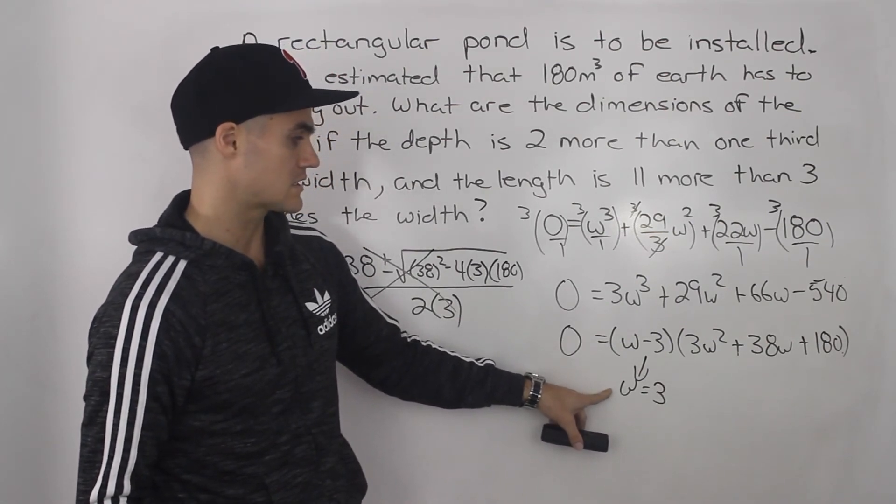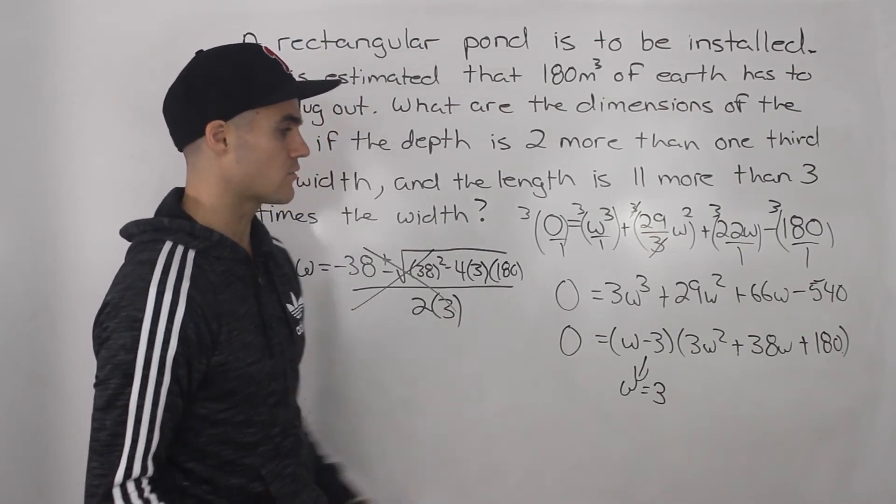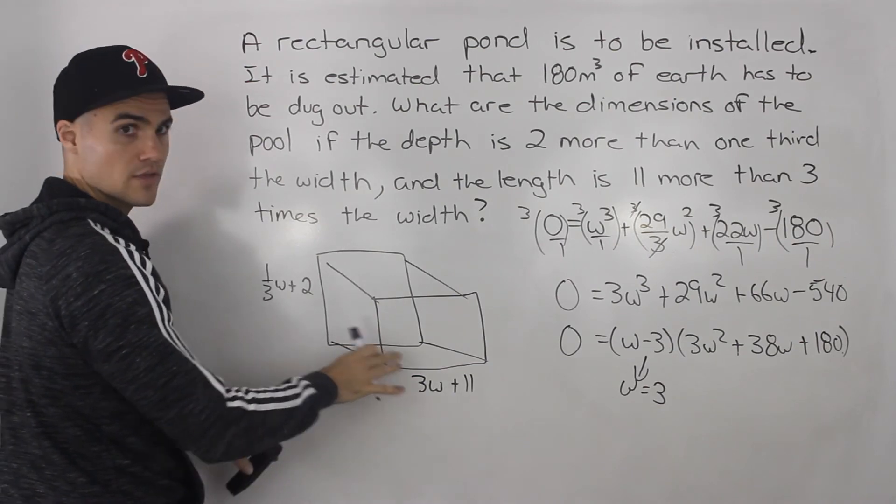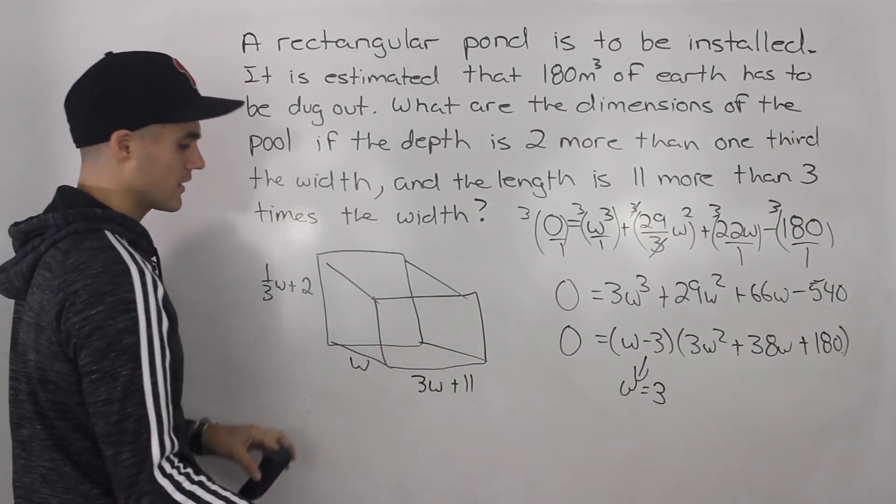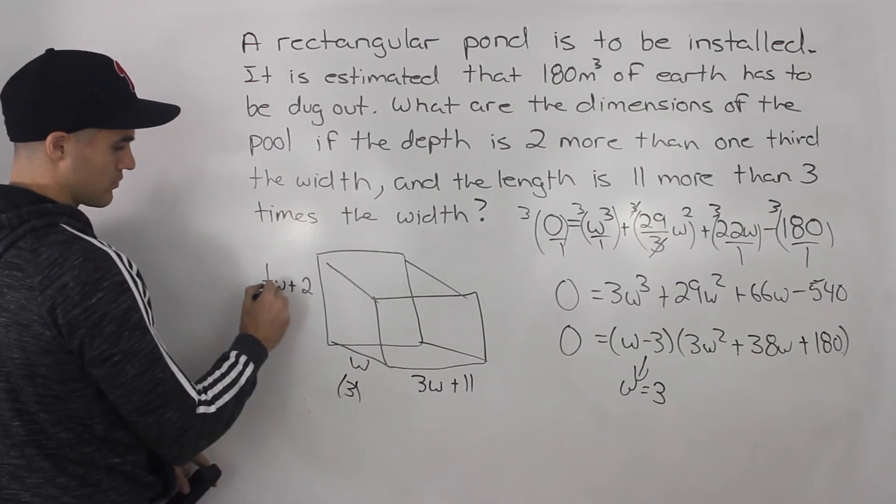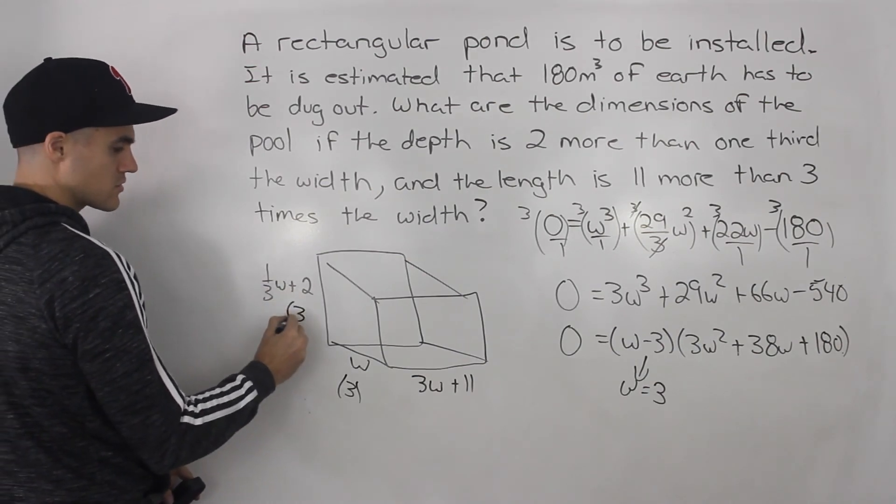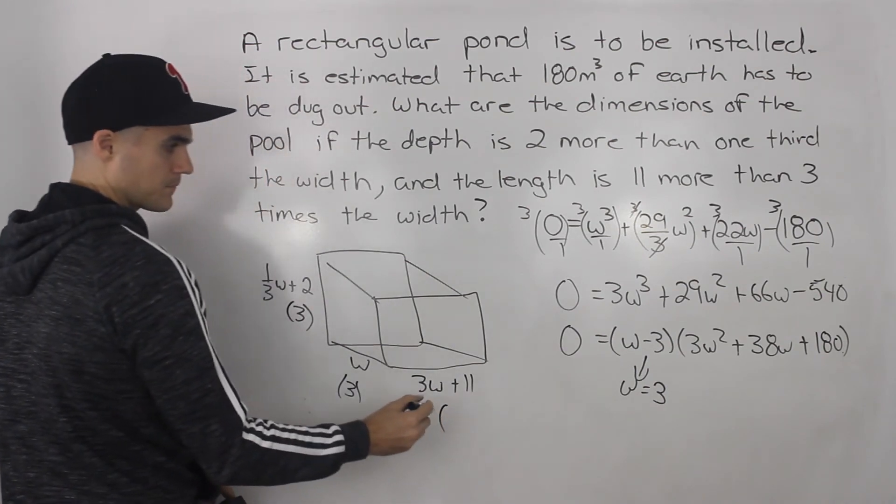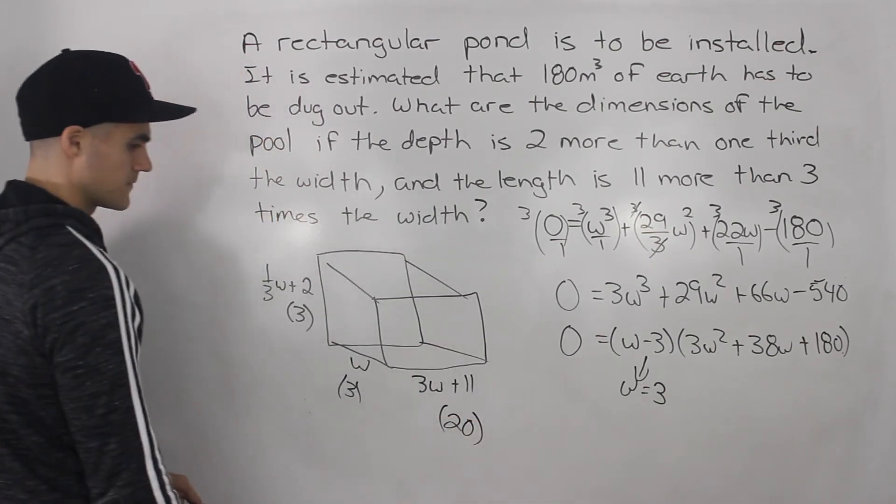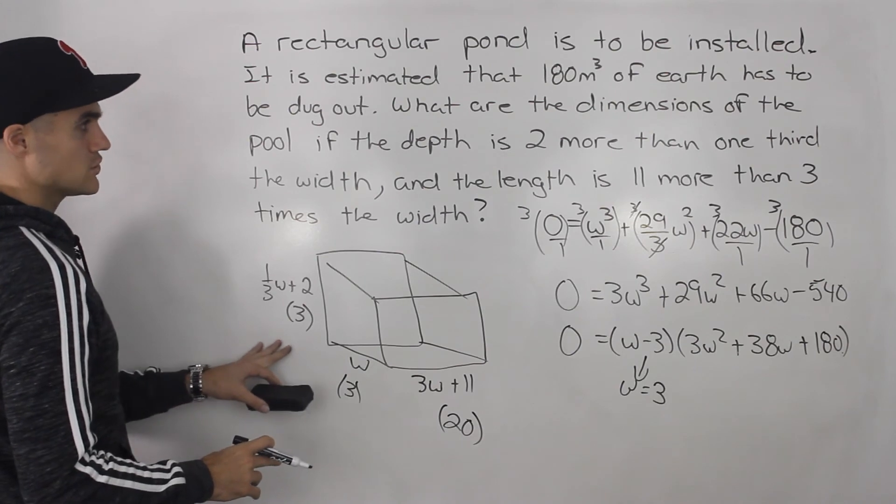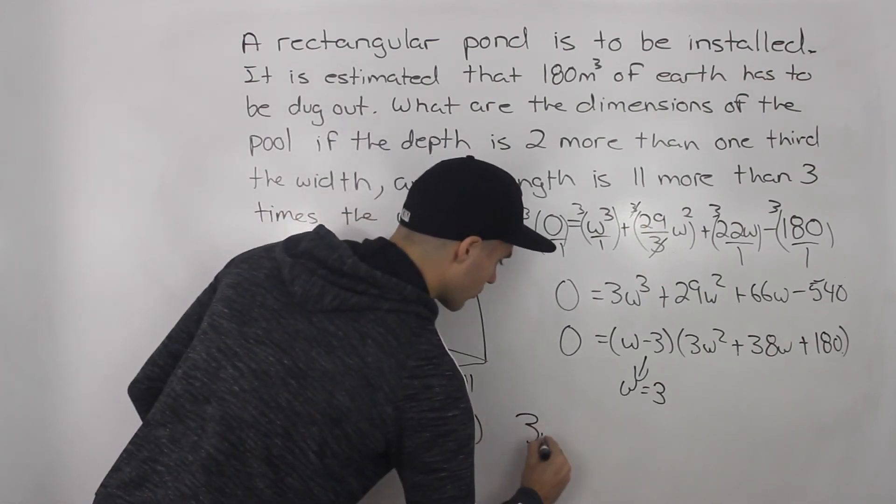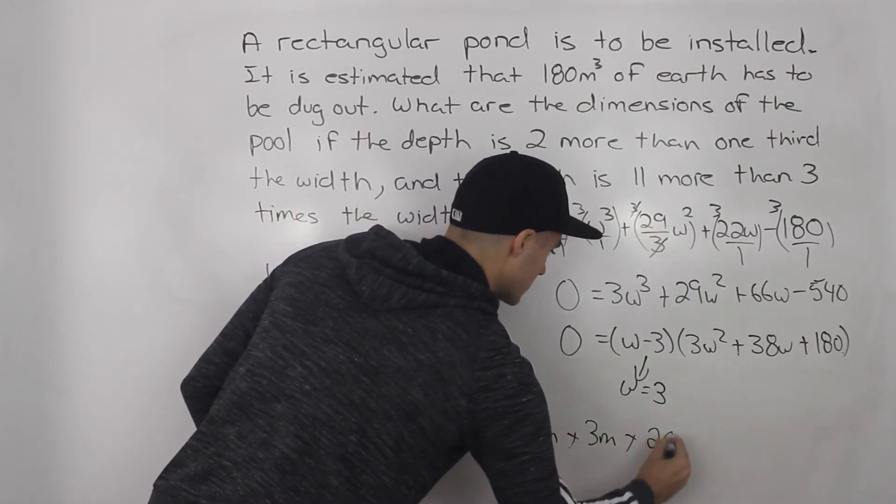Now we still have to take that w value of three and see if it actually works, making sure that the other sides are not going to be negative. And notice how they won't be. So the w will be three here. If we plug in three for w here, one third times three is one plus two gives us three. And then if we plug in a w value of three here, three times three is nine plus 11 gives us 20. So the dimensions, what are they even asking? Yeah, they're asking for the dimensions of the pool. So the dimensions of the pool are three meters by three meters by 20 meters.